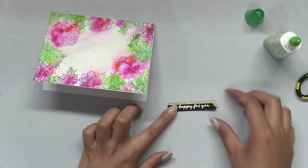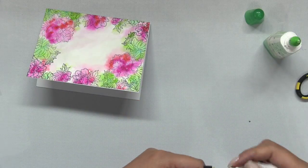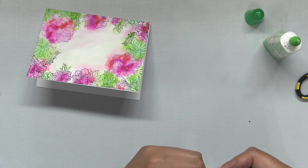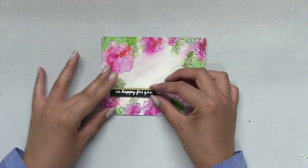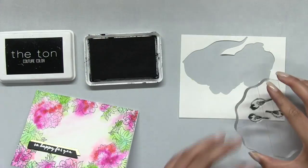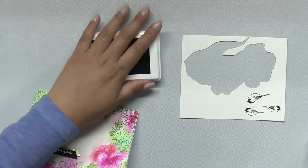That was created using our ripped soft gold adhesive paper. Once I completed my sentiment strip, I just mounted it right onto my panel using some dimensional foam tape.